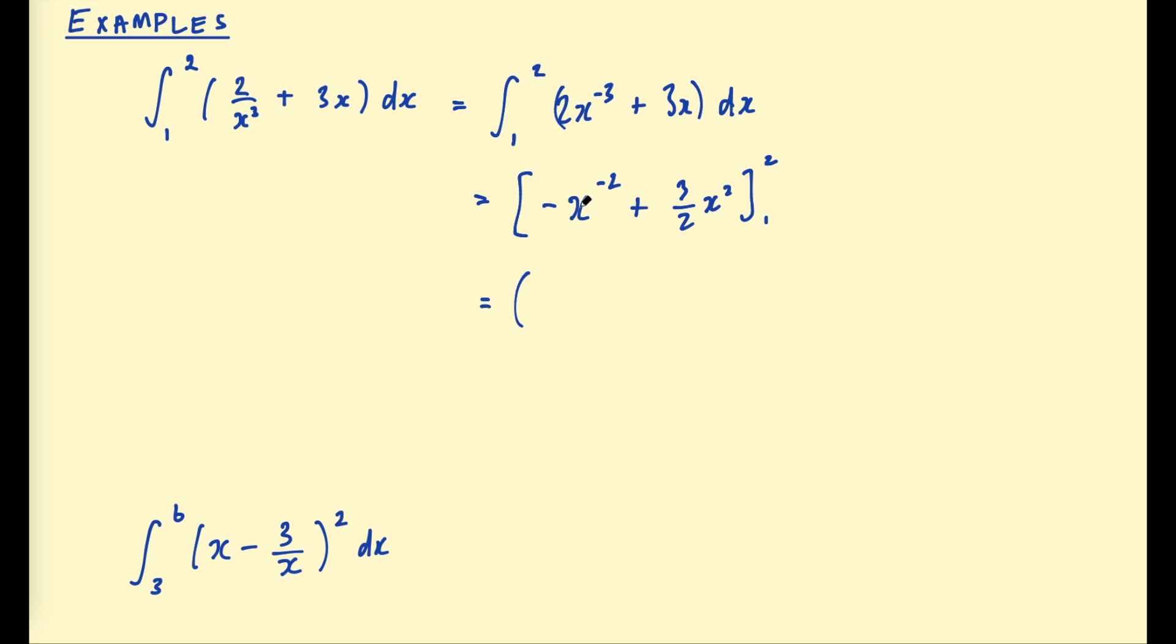Then we evaluate them at the boundary. So substitute 2 in. This would be negative 1 over 4 plus 3 over 2 multiplied by 4. 4 divided by 2 is 2, so that would be plus 6. And then subtract the function at the lower boundary. So substituting 1 in we get negative 1 plus 3 over 2. And then we just evaluate this sum. So this would be 5 and 3 quarters. And negative 1 plus 1 and a half is a half. So this would be subtract a half. 3 quarters take a half. That is 5 and a quarter.